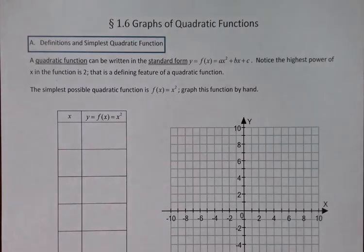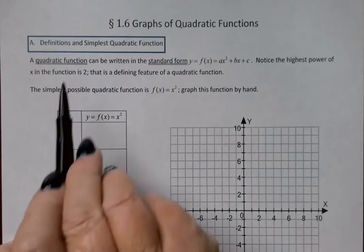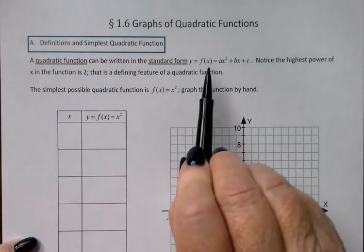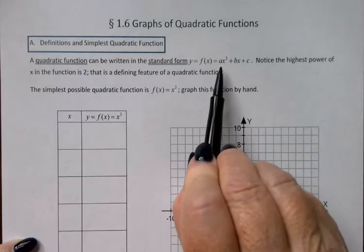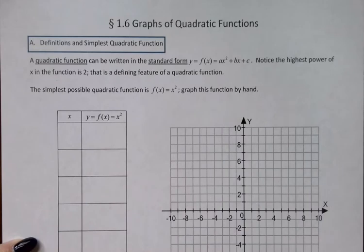In section 1.6, we're going to take a look at graphing quadratic functions. So if I've got a quadratic function, meaning my standard form looks like this, ax squared plus bx plus c.